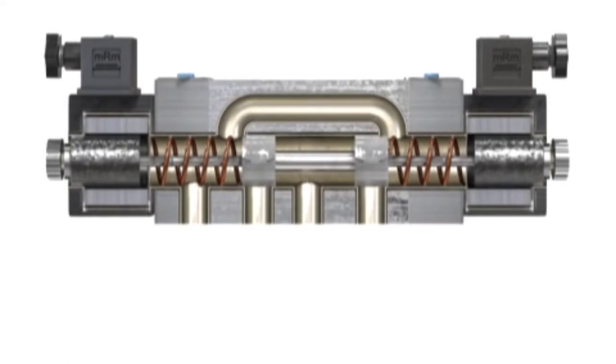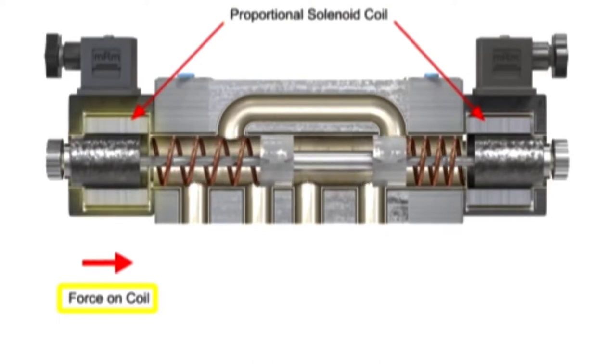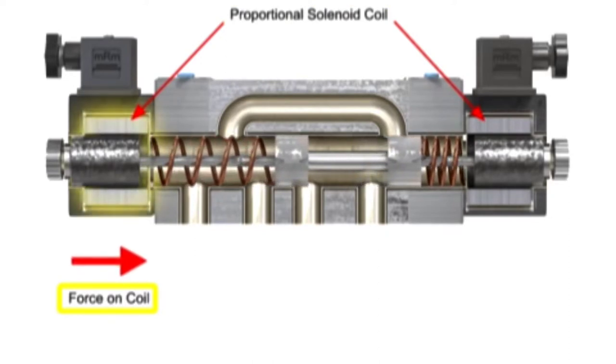Physically, proportional valves appear similar to their on-off solenoid counterparts. The big difference is in the way their solenoid coils perform. Proportional coils operate on DC current and produce varying voltages that in turn produces a variable force to shift the spool.